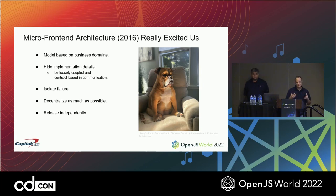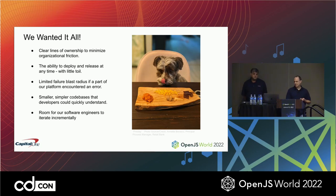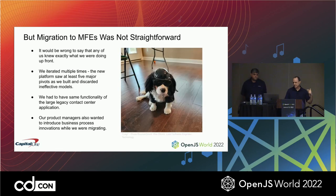These were all big things for us because we had increased pressure to bring more value to market. We wanted quick delivery, clean lines of ownership, a limited blast radius, and simpler, smaller codebases. We also wanted room for our software engineers to iterate incrementally — not upgrading one giant app with millions of lines of code at once, but upgrading slowly, one piece at a time.